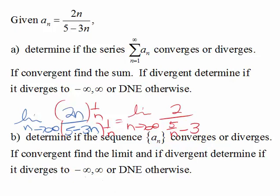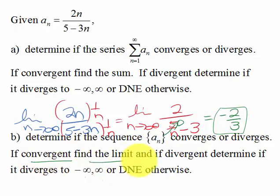And so we know that this would go to 0 and we would have negative 2 thirds. So if we're looking at the limit of the terms as n goes to infinity, it is negative 2 thirds. So this converges and we found the limit.